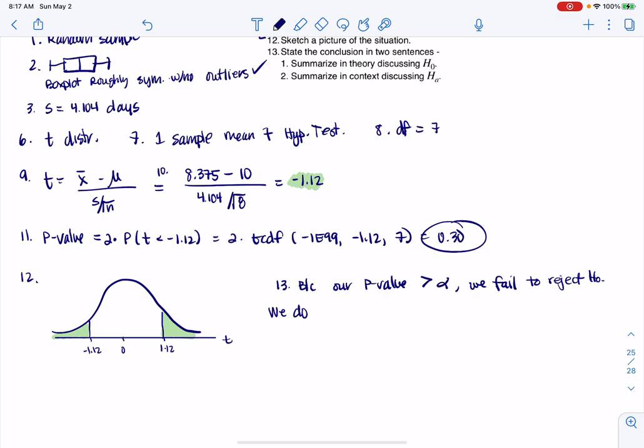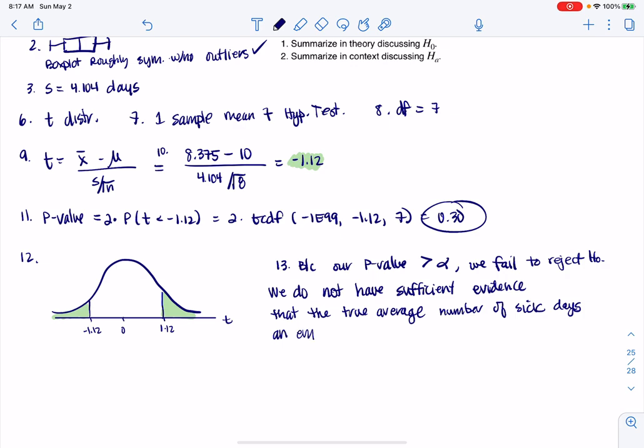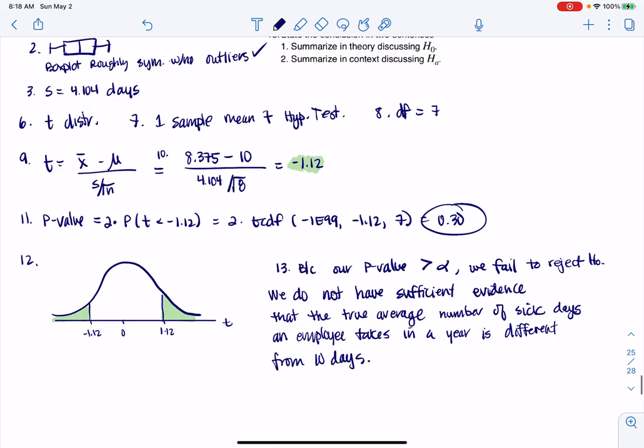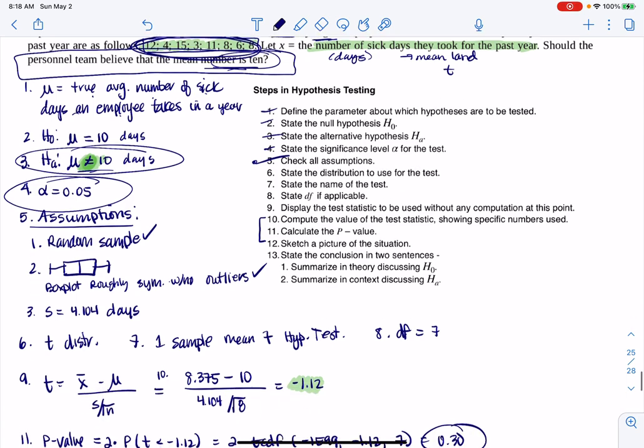Let me write that up. We do not have sufficient evidence that the true average number of sick days an employee takes in a year is different from 10 days. Now, that takes a lot to write up. You also could have written it differently. You could say we do not have sufficient evidence that the personnel team believes the mean number of sick days is different from 10. So you could have written that as well. That's another option.